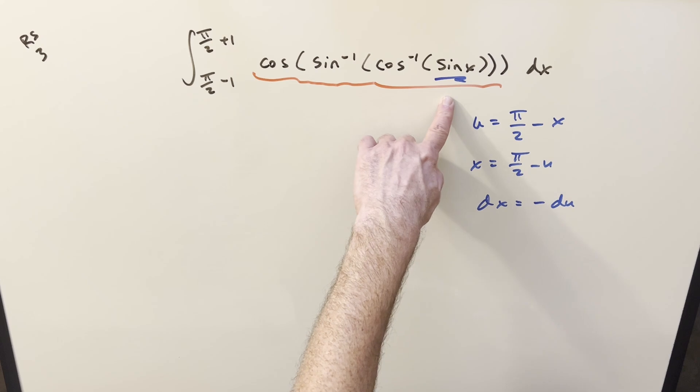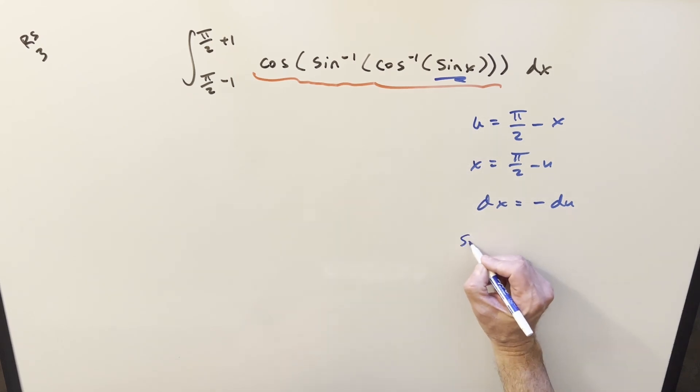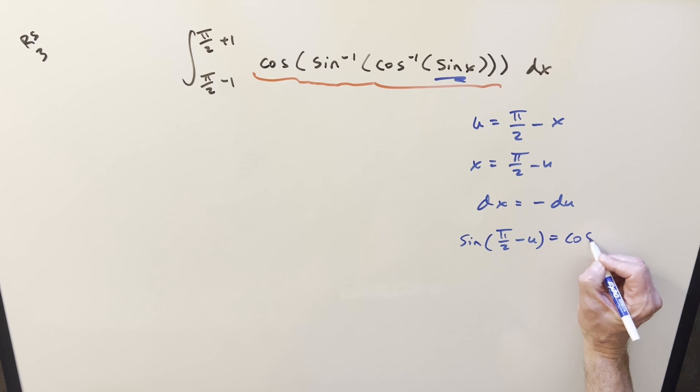And the reason I'm doing this is I want to fix just this sine x. For sine x, now we're going to have sine of π/2 minus u. But this is the complementary angle formula for sine and this is just going to be equal to cosine of u.